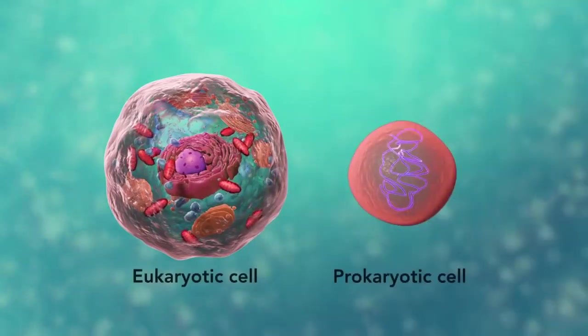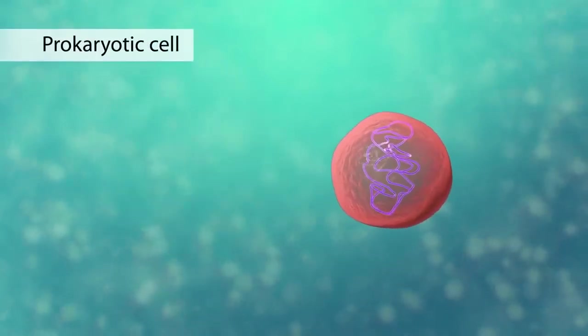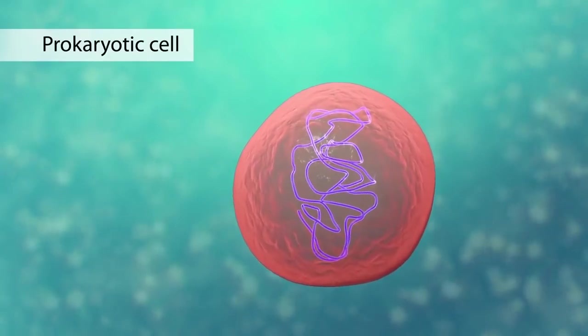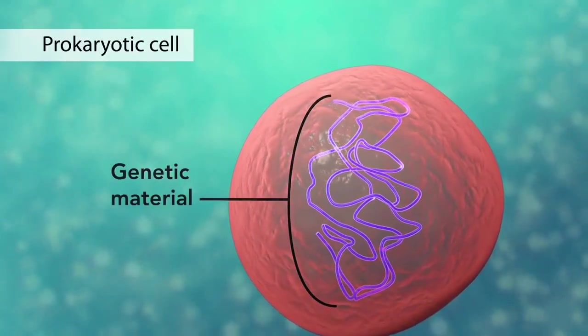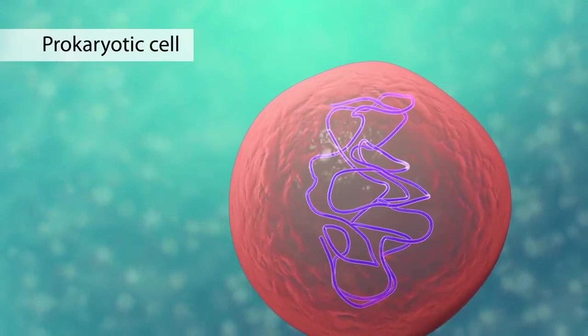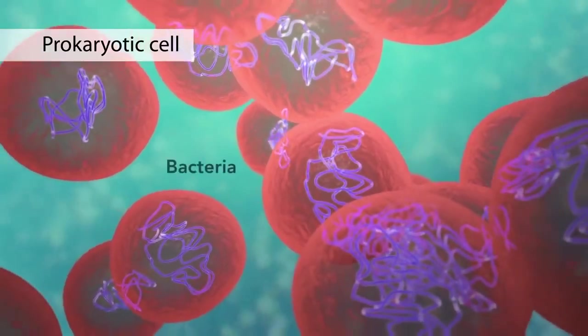The second category is prokaryotic cells. They don't have a nucleus or membrane enclosed organelles. They do have genetic material but it's not contained within a nucleus. Prokaryotic cells are always one-celled or unicellular organisms such as bacteria.